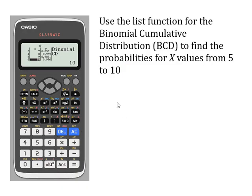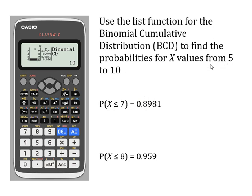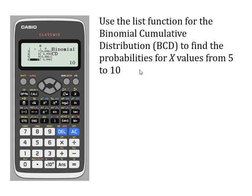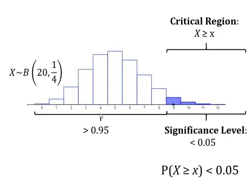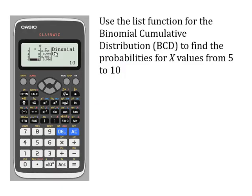We're going to use the list function on the calculator again, exactly the same as the previous video, but this time put in values from 5 to 10, because we know we're looking for quite high values of X. If the numbers don't give what you want, you can always go back and try more numbers. We want P(X ≤ some number) to be greater than 95%. You should spot that P(X ≤ 7) is just below 95% and P(X ≤ 8) is just above 95%.